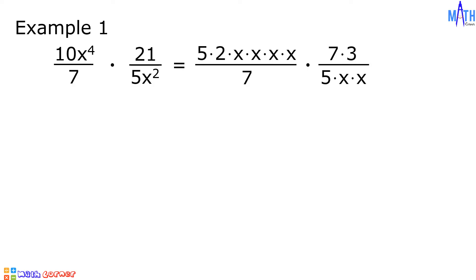5x squared is equal to 5 times x times x. Step number two, cancel out common factors. In this example, we can cancel out 5, cancel out x, cancel out x, cancel out 7.